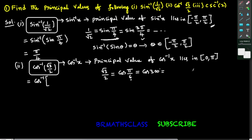Which one do we need to choose? Observe this pi by 6 — is it in the closed interval 0 comma pi? Yes. Is 300 degrees in the closed interval 0 comma pi? No. So we choose cos pi by 6. In place of root 3 by 2 you write cos pi by 6. Now look at this expression: cos inverse of cos pi by 6.